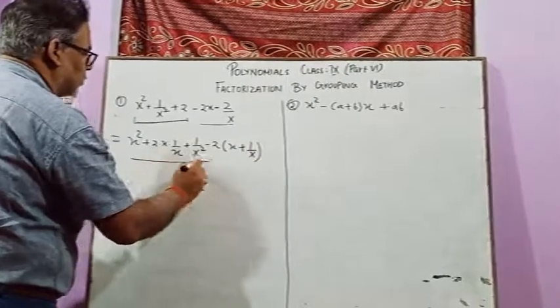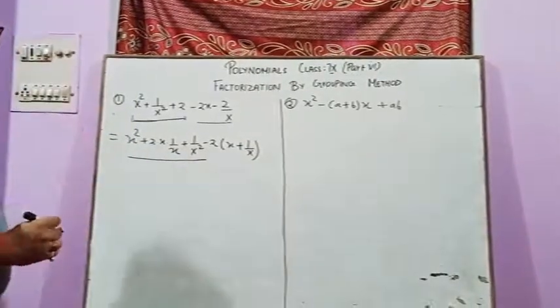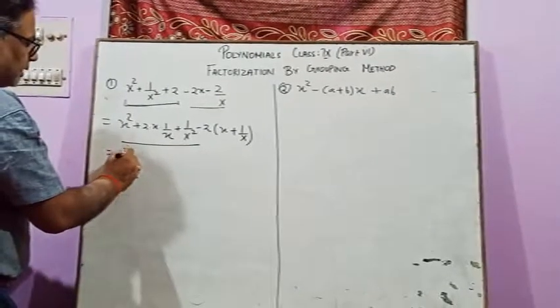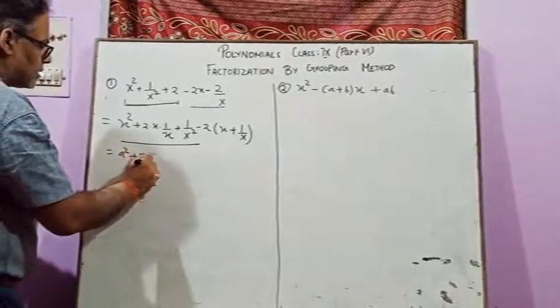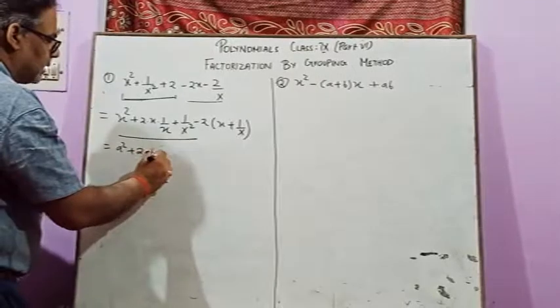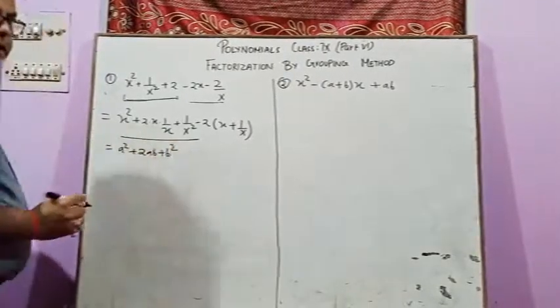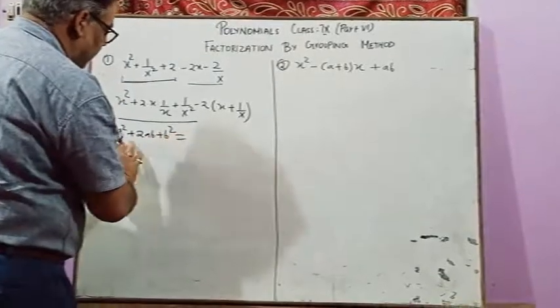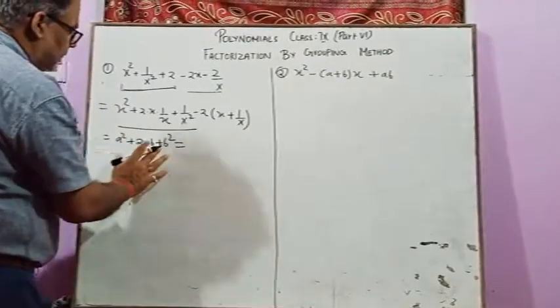Now see here this portion, observe it very clearly. If you observe it, then this portion is based on this formula: A squared plus two AB plus B squared, which you are studying in class 8. Now if you write this part, this part is in this way.